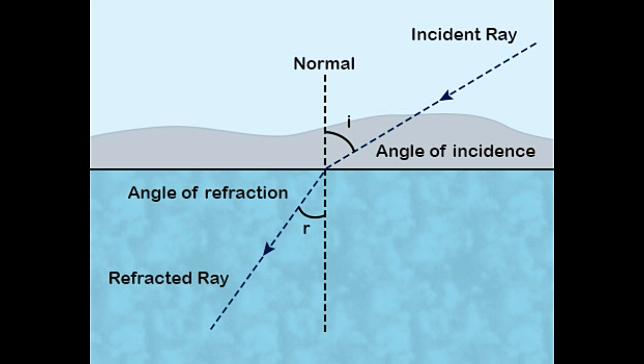Refraction was first studied by the Roman scientist Ptolemy in the 2nd century CE. While measuring the angle of refraction against the angle of incidence, as light passed through different media, he discovered that the angle of incidence of light was proportional to the angle of refraction.